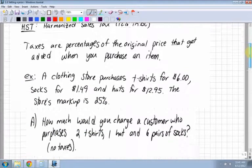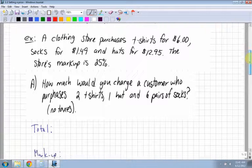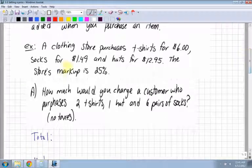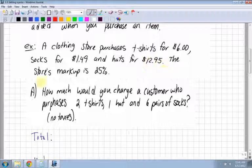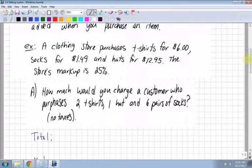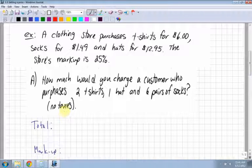For example, if a clothing store purchases t-shirts for $6, socks for $1.49, and hats for $12.95, the store's markup is 25%. The first question: how much would you charge a customer who purchases two shirts, one hat, and six pairs of socks? No taxes in this one.